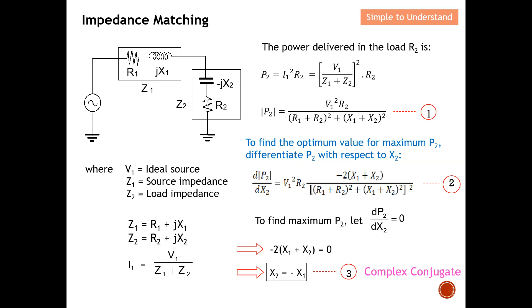Z1 consists of R1 plus jX1, and similarly the load Z2 consists of R2 plus jX2. This impedance is a combination of a resistor and an inductor. Before working through this, we won't yet assume they need to be complex conjugates, so let's take Z2 as R2 plus jX2. From this, we can find the current I1 flowing through the circuit, which is V1 divided by the total impedance Z1 plus Z2, since they are in series.